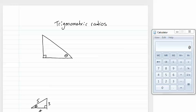Trigonometric ratios. In the last video we learned that any right-angled triangle has sides that are the opposite, the adjacent, and the hypotenuse.